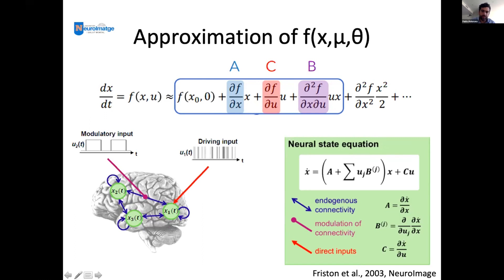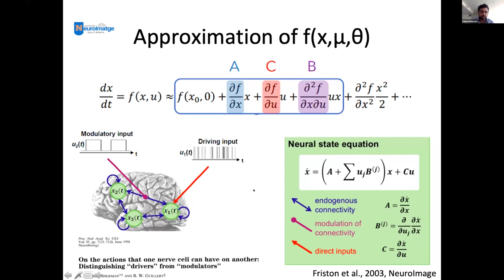A represents endogenous connectivity — the edges between one node and another. B represents the modulation of connectivity — the modulatory input. The brain sometimes responds fast and sometimes slow; this captures the driver or modulator response. C is the driving input — what is the input that drives my network. I want to give a general framework to understand what DCM means.